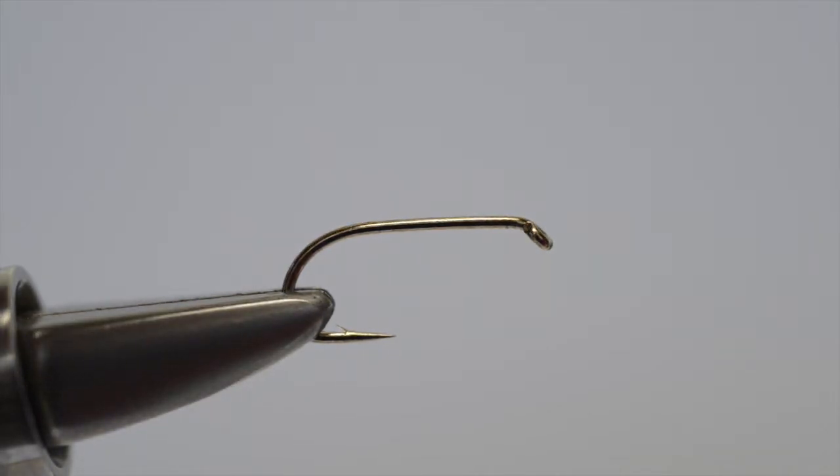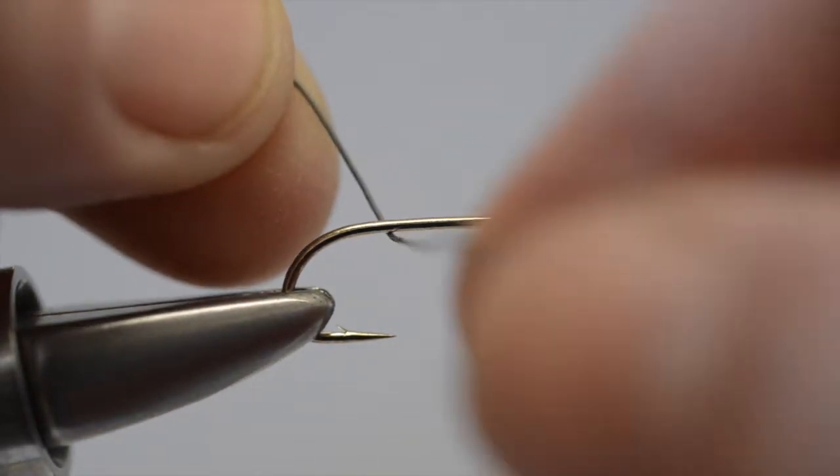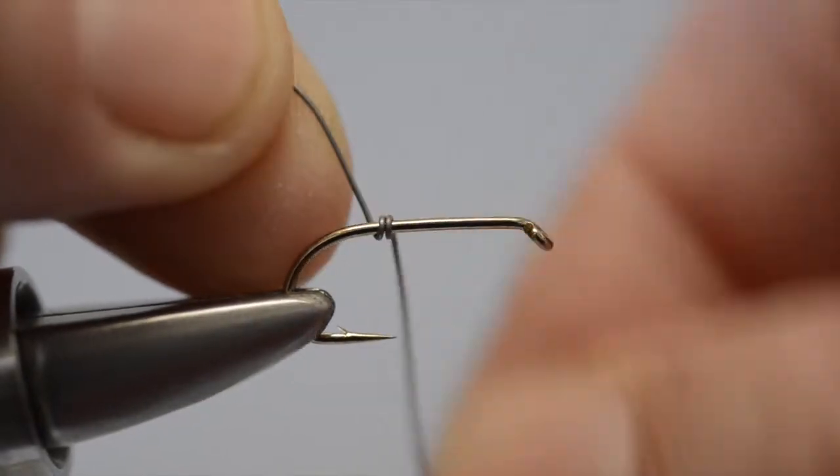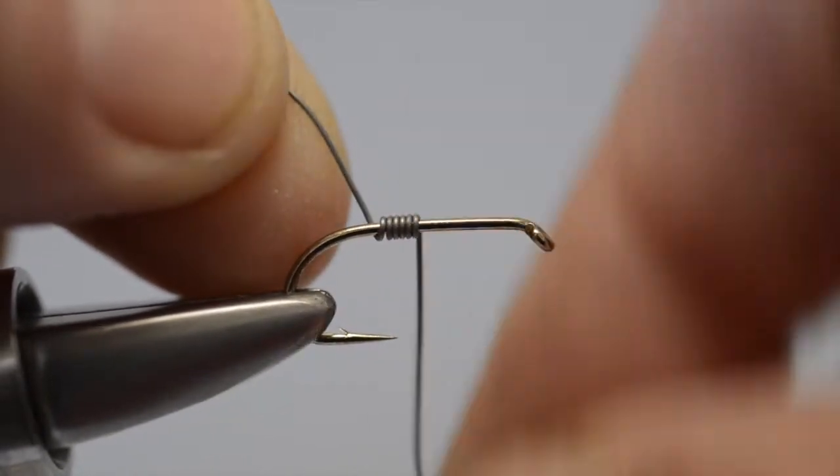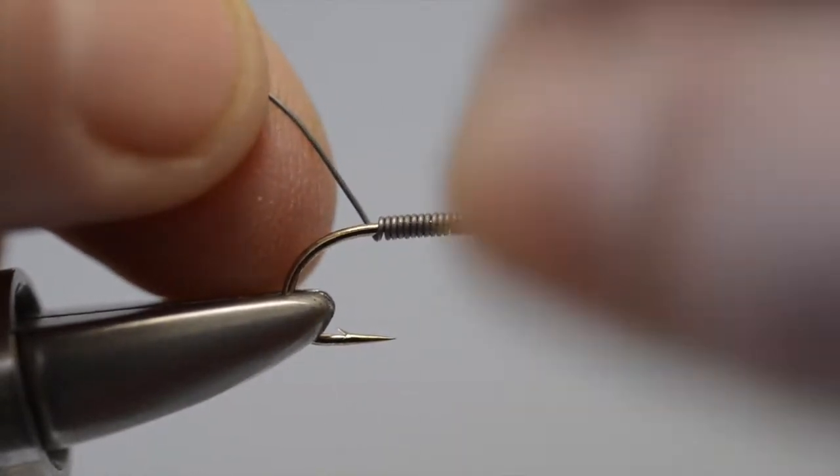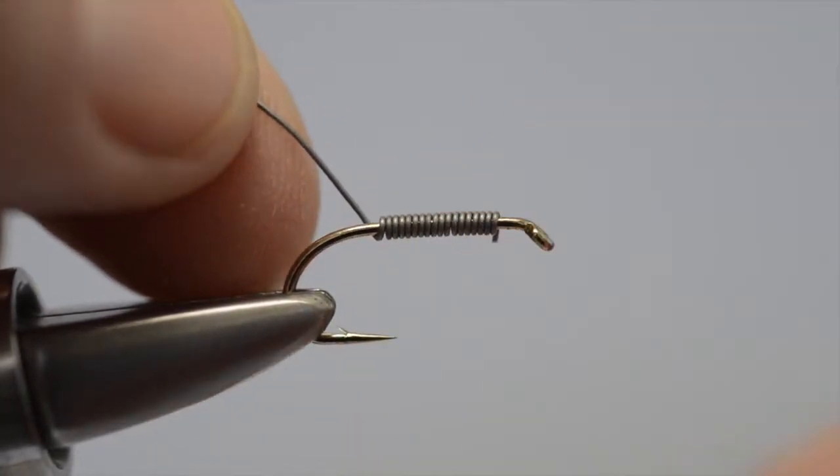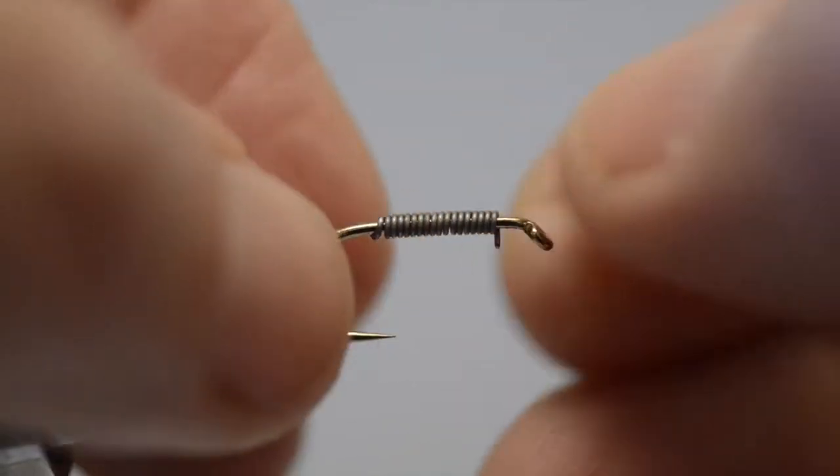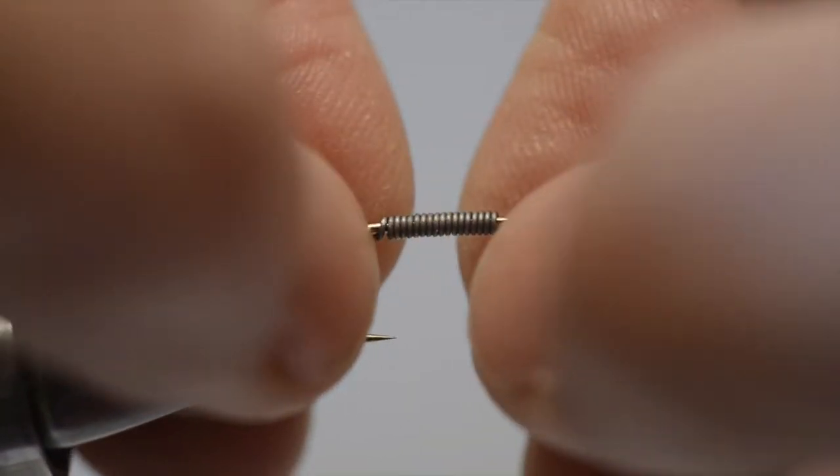The first step then is to run on the lead wire, which is the weighted underbody. So we start close to the bend and wind it forward in touching turns, stopping just short of the eye. Remove the loose end, then the other end, and push the turns together.